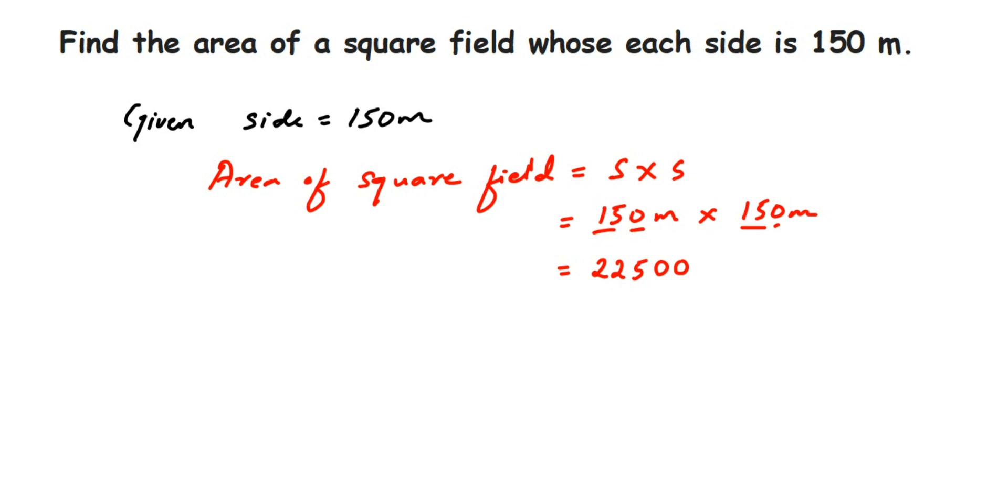Now we have meter times meter, so it will become meter squared. The unit of area will always be in square centimeters or meter squared, whatever unit is given in the question. So here we'll get meter squared. The number is 22,500 meter squared. That is the area.